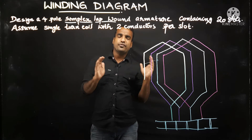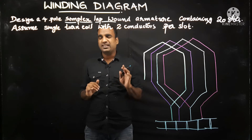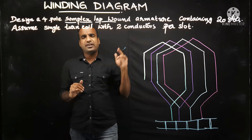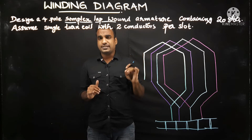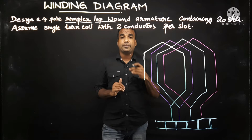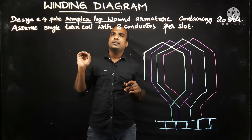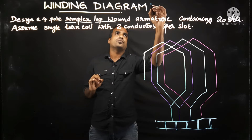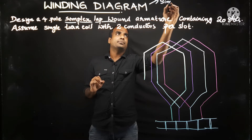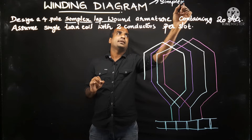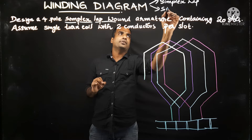There are two windings in your syllabus: simplex lap winding and simplex wave winding. Duplex wave or triplex wave such things will not be asked in university exams because it takes a lot of time to complete the drawing. So simplex lap and simplex wave — these are the two things we need to learn in winding diagrams.